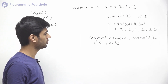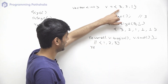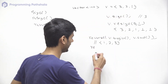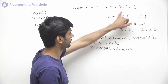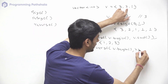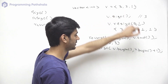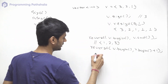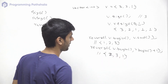Now let's say we just want to reverse the first two elements. In that case we can pass a pointer pointing to the first element and a pointer pointing to the second element. So we write reverse with v.begin() and v.begin() + 1, where v.begin() points to the first element and v.begin() + 1 points to the second. This will reverse the first two elements, so the vector would look something like this: 2, 3, and 1.